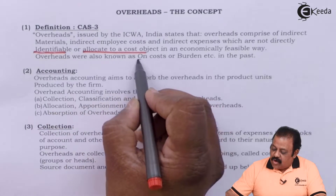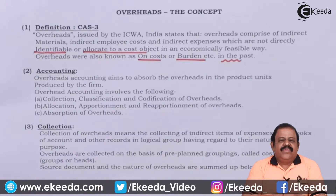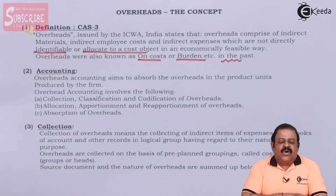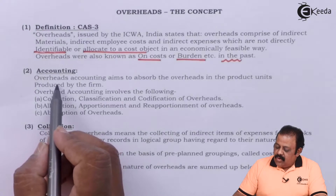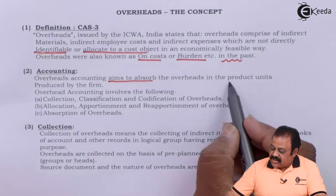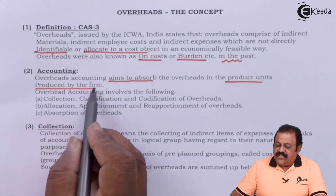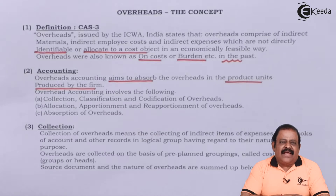Overheads were also known as on-cost or burden in the past. We are required to consider overhead cost, without which we cannot arrive at the actual cost of any product. So there is a need for accounting of overheads. Overhead accounting aims to absorb the overheads in product units produced by the firm. The simple meaning of absorb here is to include whatever expenses are incurred relating to a particular product while calculating the total cost of the product.